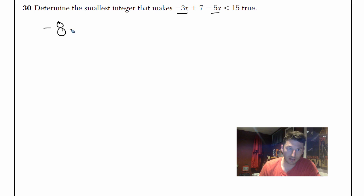So that's going to be -8x + 7 is less than or equal to 15. So now treat this like an equation. Minus 7, minus 7. -8x is less than or equal to 8.